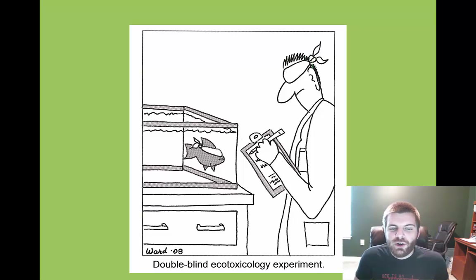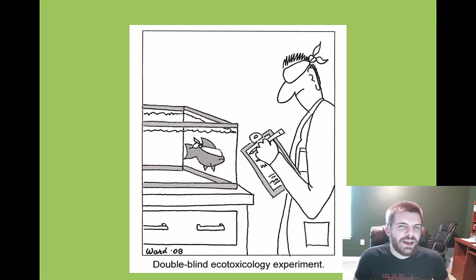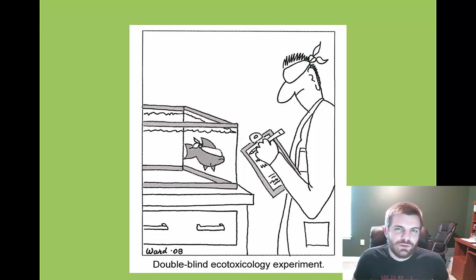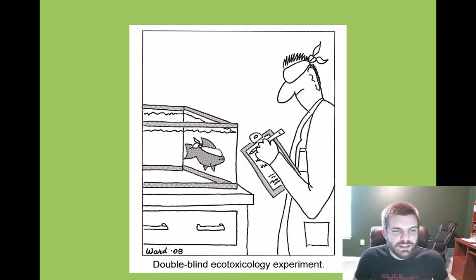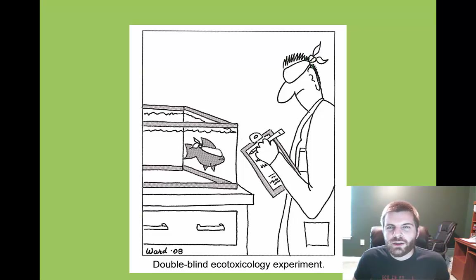Finally, there's a cartoon about utilizing the double-blind procedure, which helps eliminate experimenter bias. The head researcher doesn't know who belongs to which group, and the participants don't know which group they belong to either, which helps eliminate experimenter bias. Thanks for joining, and hopefully you'll join me next time for lesson number four, which will look at the descriptive and correlational style of research.